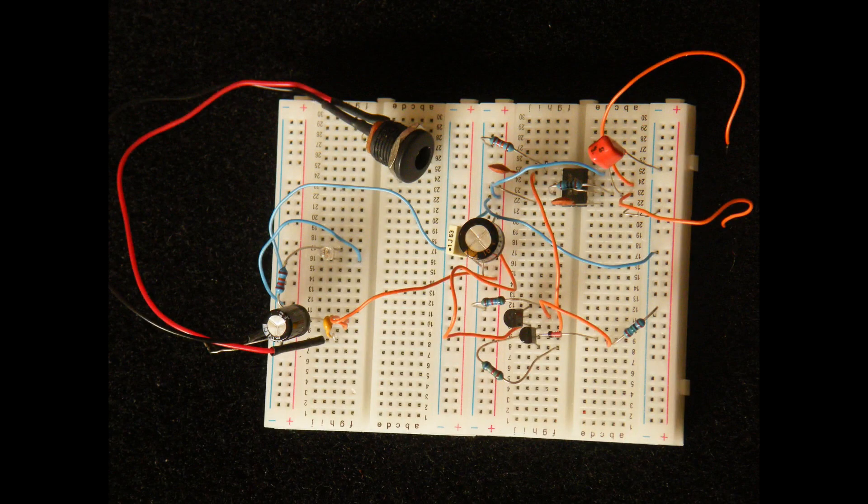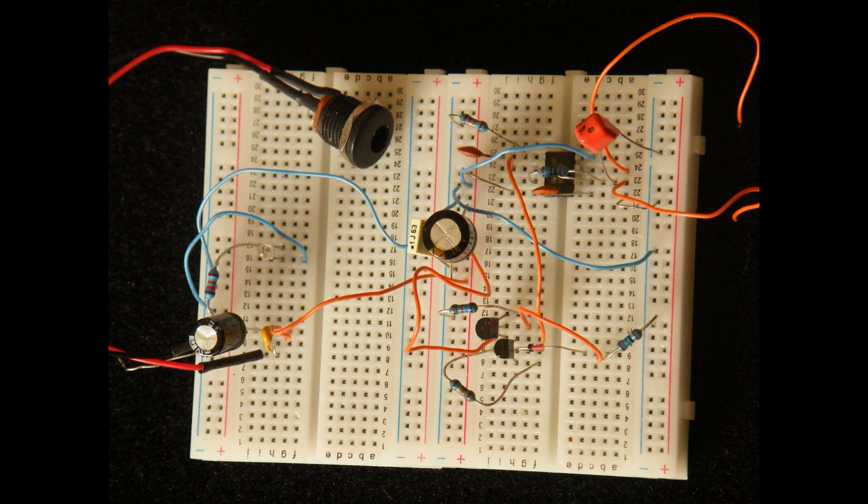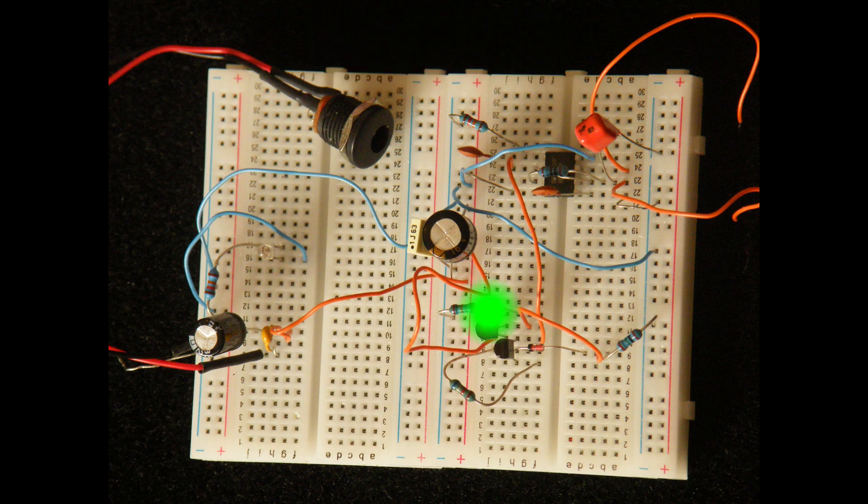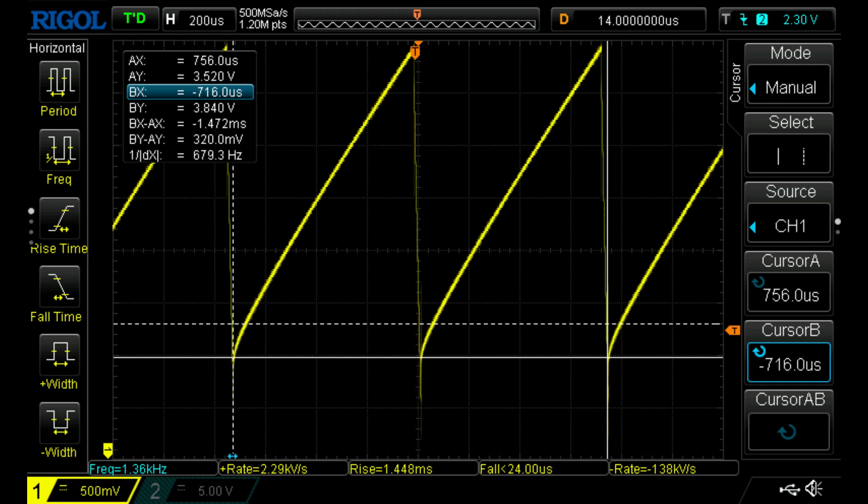We're now looking at the breadboard of that improved circuit. Let's now take a closer look. The breadboard is exactly the same as the simpler circuit except for the addition of the emitter follower transistor and associated components. I need to mention that I've been continually calling this a ramp wave. You can actually call it a sawtooth wave as well. They're both the same.